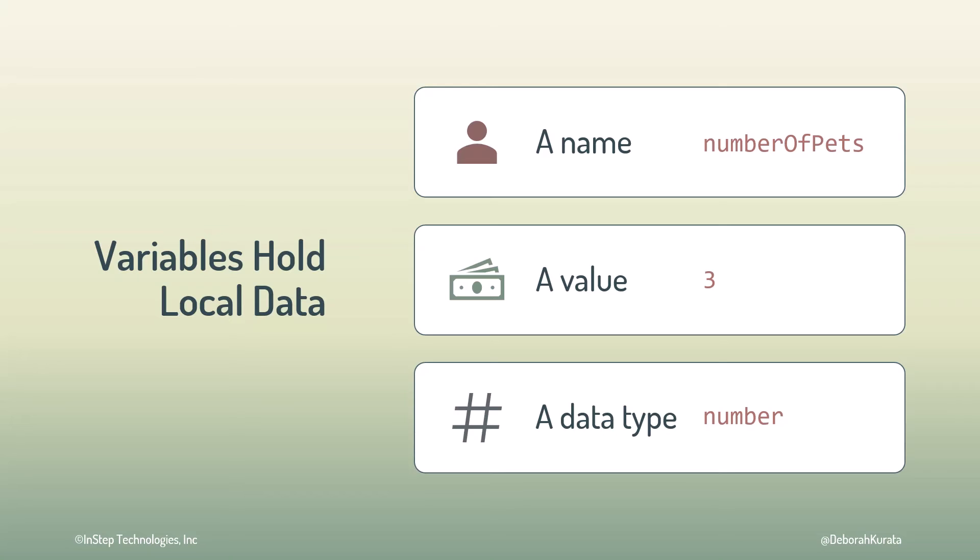We give each variable a unique name, so the program can keep track of what data is in which variable. A variable value is variable, meaning its value can change as the instructions run. So our numberOfPets can be three now, but if the user wants more pets, it can later be five.